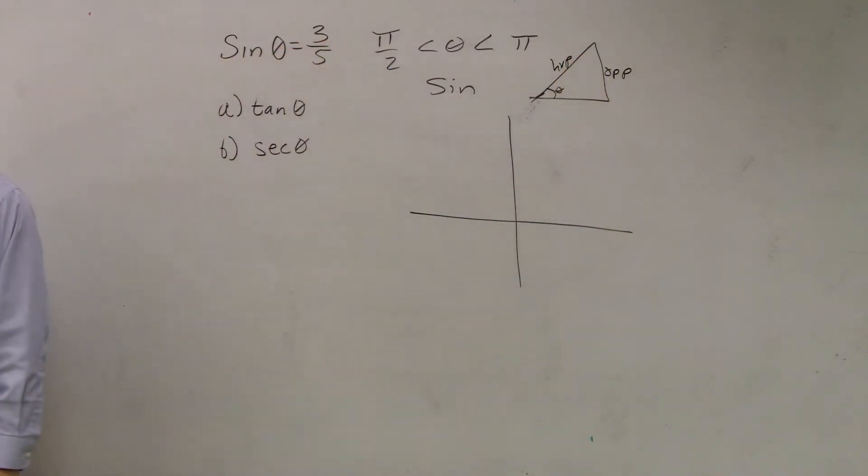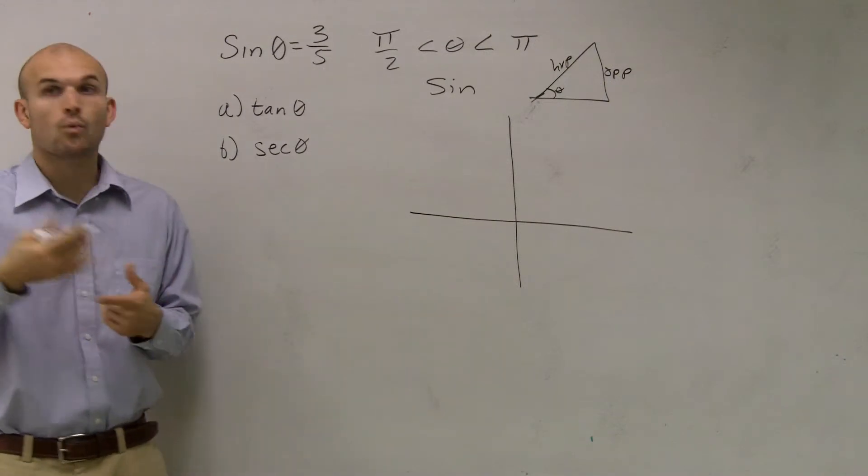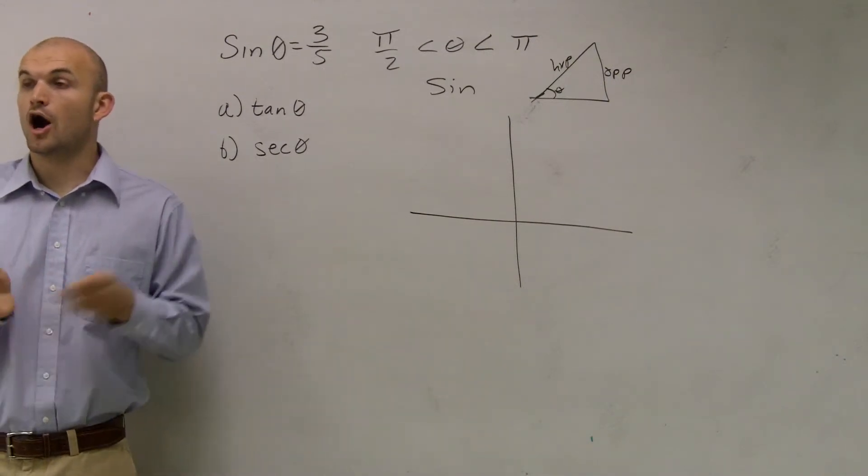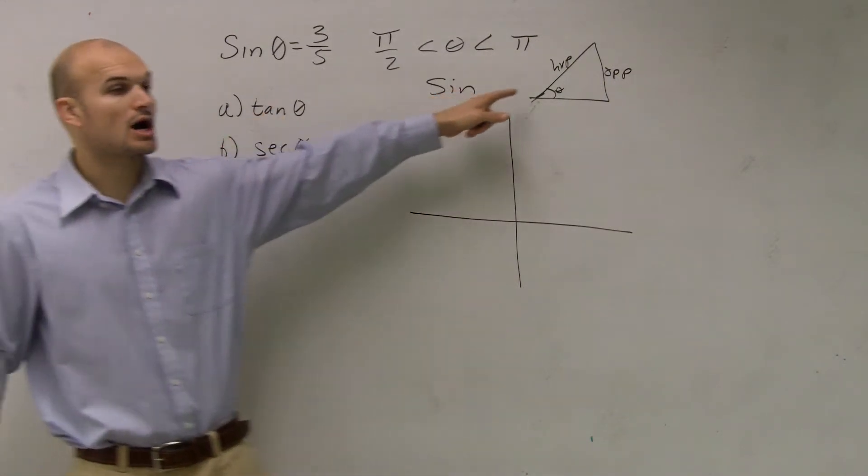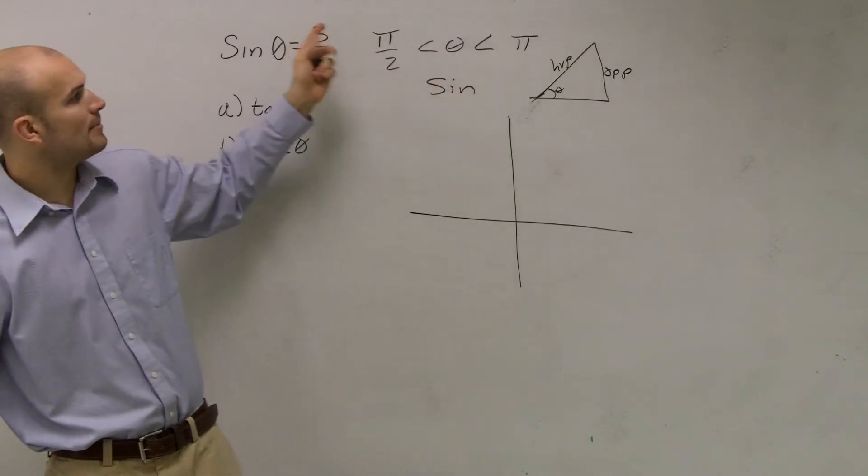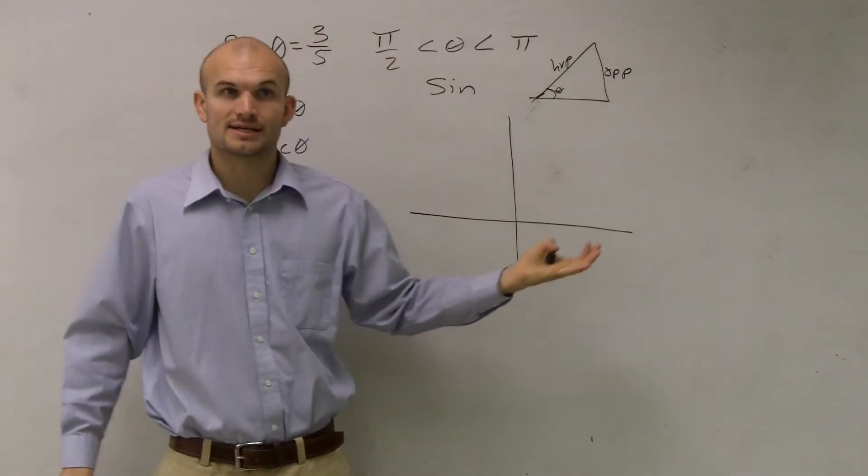Your opposite over your hypotenuse. Also, we also talked about sin represents really our y over our r, where r was our radius or our hypotenuse, and our y was really like the height.